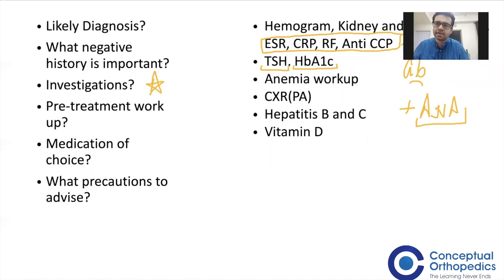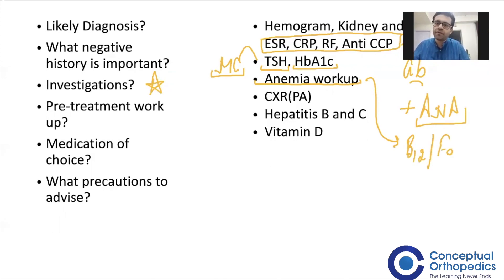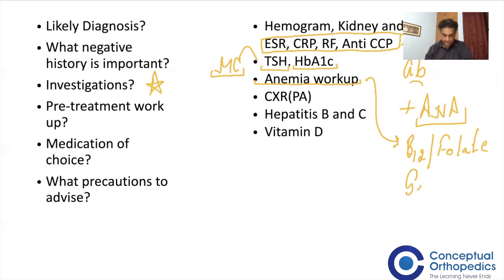Diabetes screening must be done because steroids may be used for some patients. Hypothyroidism is the most common endocrine abnormality associated with autoimmune rheumatic diseases, and every patient must be screened at baseline. Many of these patients will also have anemia — the most common cause in our country is iron deficiency, but in inflammatory diseases like rheumatoid arthritis or lupus, anemia of chronic disease becomes very important.